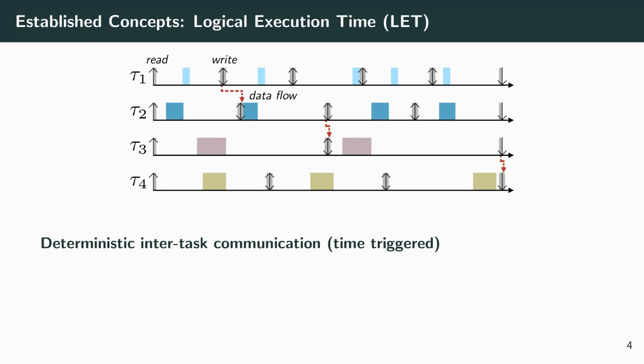An approach to tackle data jitter and increase the predictability of data ages is the logical execution time, short LET. Here data propagation is precisely timed at periods beginnings and ends. Computational parts are separated and can be executed in between. This pattern increases predictability as it clarifies which jobs consume data from which producer job, eliminates jitter, but induces no additional synchronization overhead. Unfortunately, predictable means here that the data age always reaches the worst case by design. Additionally, this execution model needs support from the operating system or programming language and induces context switches, decreasing schedulability.